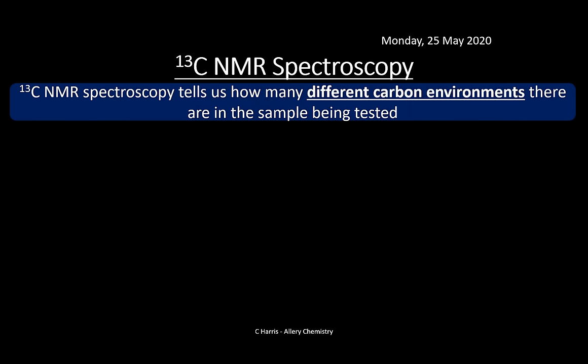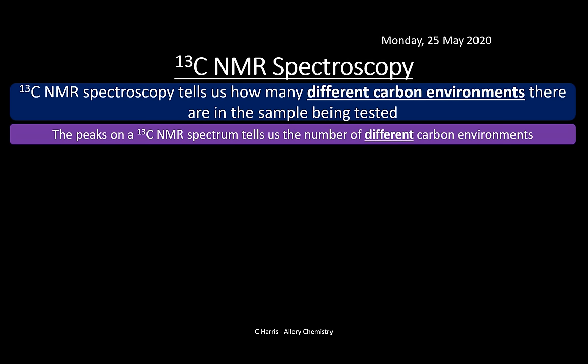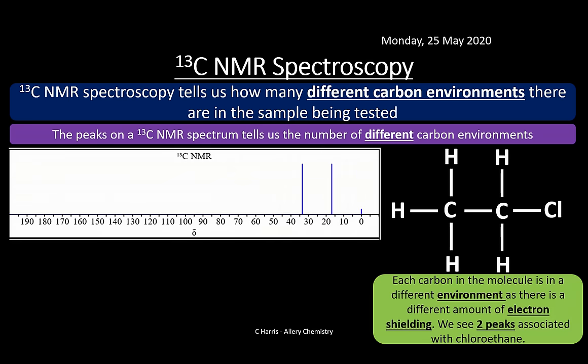Carbon-13 NMR tells us how many different carbon environments there are in the tested sample. The peaks tell us the number of different carbon environments. For example, running chloroethane through the machine: each carbon is in a different environment with a different amount of electron shielding, so we see two peaks. The chlorine pulls electrons away from the adjacent carbon, reducing its shielding, making it more influenced by the external magnetic field.